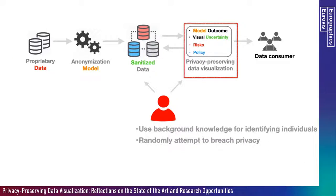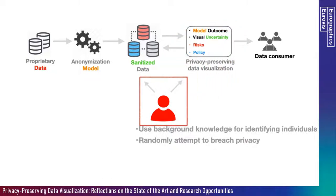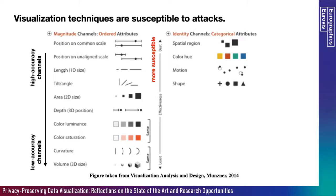Now, referring again to the privacy preserving data visualization pipeline, in this section we will discuss the vulnerability of high and low accuracy channels and how an attacker can exploit them using background knowledge. This reference diagram helps understand high and low accuracy channels: channels on the top like position are high accuracy channels, while channels on the bottom like volume are low accuracy channels.